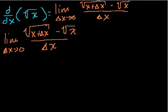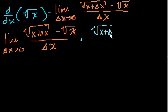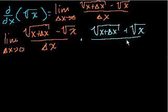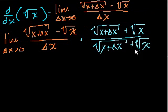I'm going to multiply that times √(x + Δx) plus √x over √(x + Δx) plus √x. This is just 1 — assuming that x and Δx aren't both 0, this is a defined number, so this would be 1.